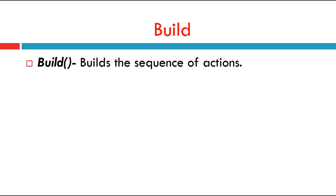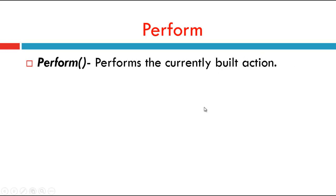Now let's see what is build and perform. Build builds the sequence of actions. The build method is used to compile all the listed actions into a single step. We have to use build when we are performing a sequence of operations, and there is no need to use it if we are performing a single action. Perform executes the currently built action. It is a convenience method for performing the actions without calling build first.